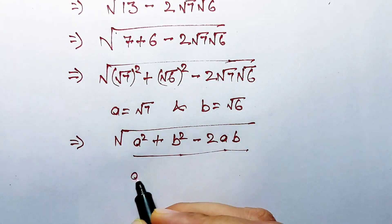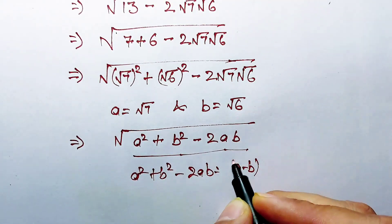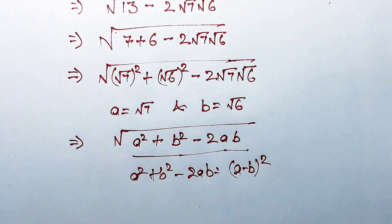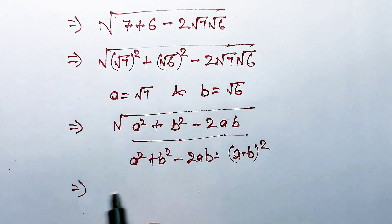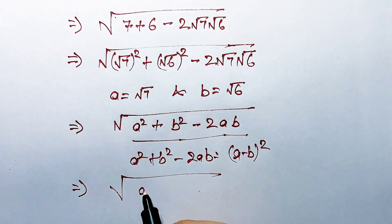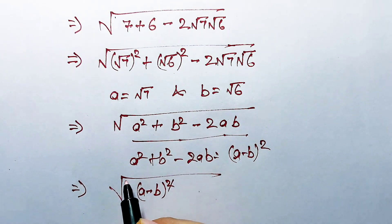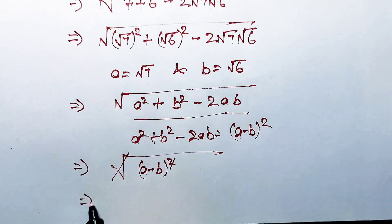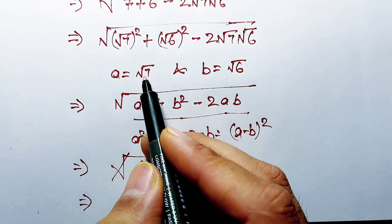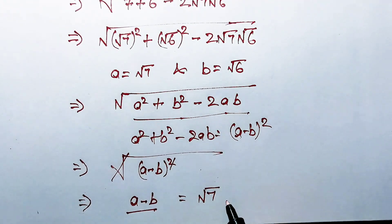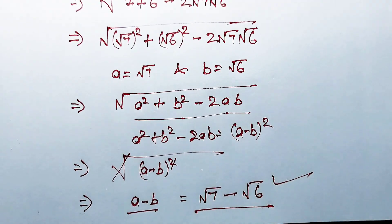If you know that this is the formula for a minus b squared, which equals this expression. Now I can write a minus b here, and the square will cancel out the square root. What is left is a minus b, where a is equal to square root of 7 and b is equal to square root of 6, and that is our final answer.